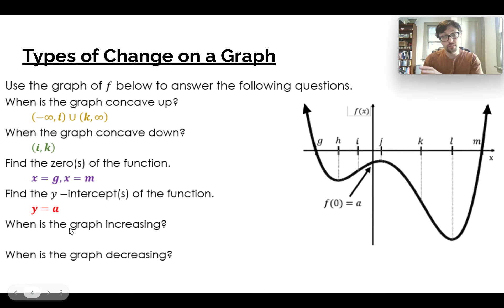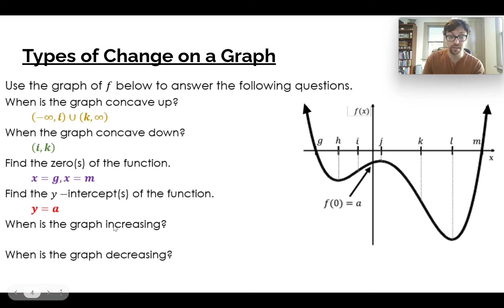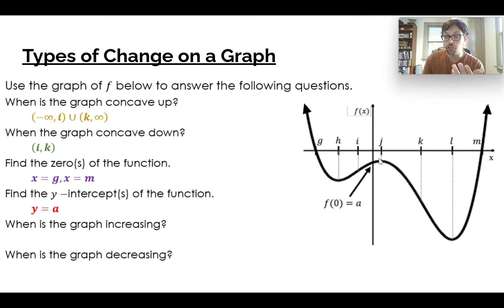Remember, increasing and decreasing are not the same as concave up and concave down. When it's increasing, that's when the graph is going up. Right here we're going down, so we don't want that. We want from h to j because that's where we're going up, as well as from l to positive infinity because all of that is going up.